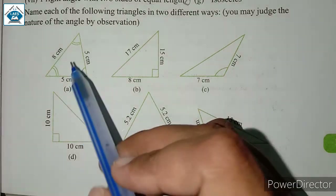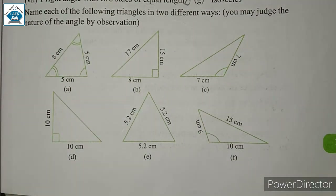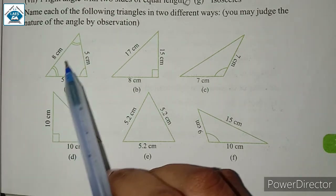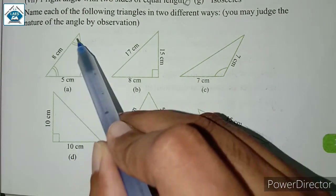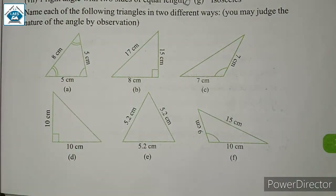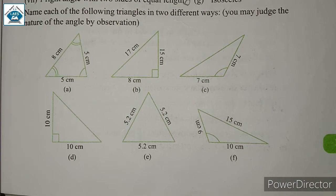The second name should be based on angles. The symbol here means the two marked angles are equal — both curves indicate equal angles. By observation, all three angles are acute angles, less than 90 degrees. So, this is an acute angle triangle. The first name of this triangle is isosceles triangle; the second name is acute angle triangle.